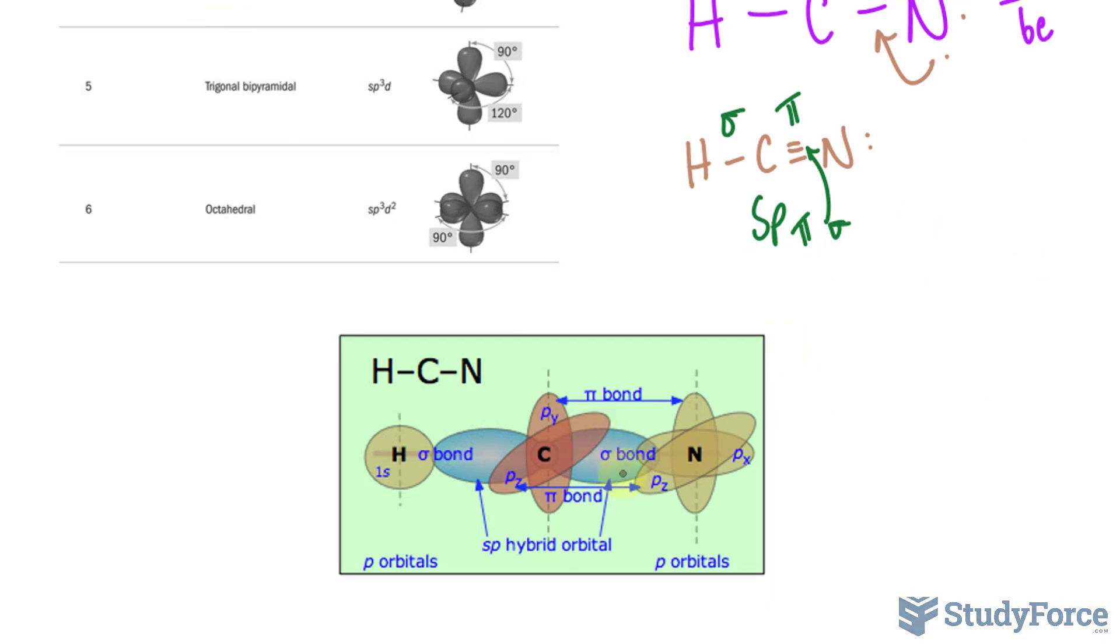Take a look. Here we have the SP hybrid orbital, one here and one here, as shown. The orbital here and the orbital here are facing directly towards each other, forming a strong sigma bond. And we also have these pi bonds being formed with the adjacent atoms. And of course, pi bonds are technically weaker than sigma bonds.